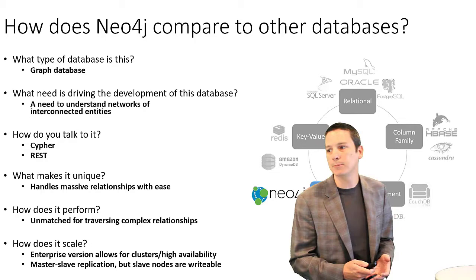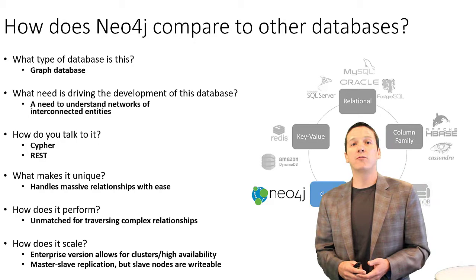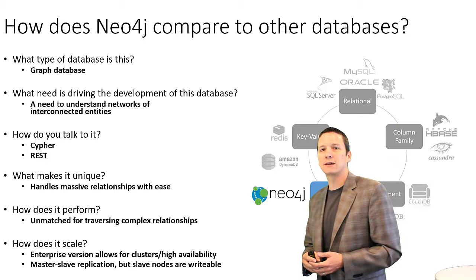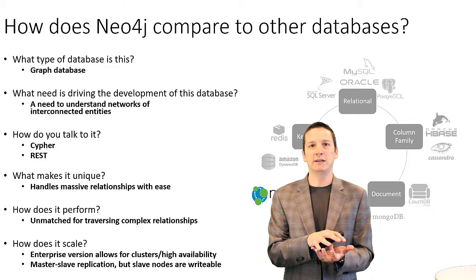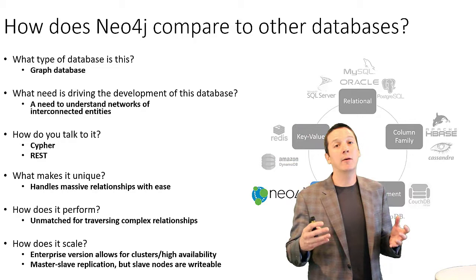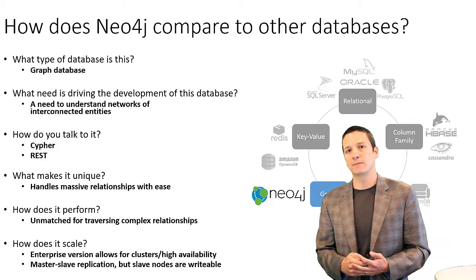We have unmatched performance for traversing these complex and deep relationships. As far as scalability goes, the enterprise version of Neo4j does allow for some high availability, clustering, and replication. But for the most part we want to keep our graph stored on one machine for performance reasons. So there is some room to grow, but by and large graph databases are going to work best when confined to a single machine.